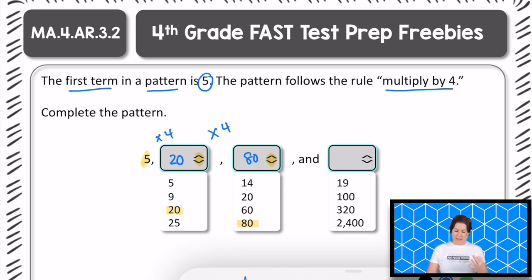Multiply that third term of 80 by 4 to continue following that rule. 80 times 4 equals what?